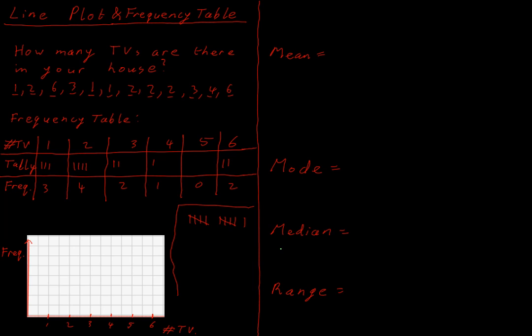So what have we got? Now we have numbers of TVs in a house, and we have the frequency of those houses. So we have three houses that have one television in them. We have four houses that have two televisions in them. We have two houses that have six televisions in them. So how can we draw a graph of that to keep track of how many houses have different numbers of TVs? Well, one of the things we can do is called a line plot, which somewhat unexpectedly involves a bunch of dots as opposed to lines.